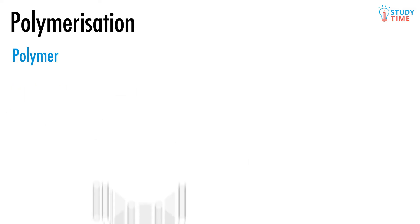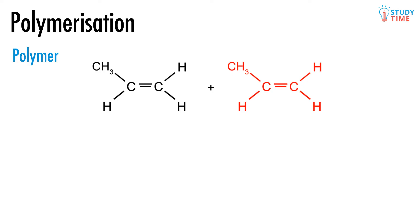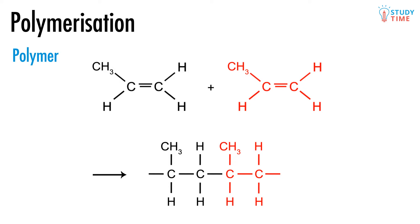We get a polymer when this molecule of propene meets another molecule of propene. Then the double bond will break open, and the two molecules will merge into part of the polymer.